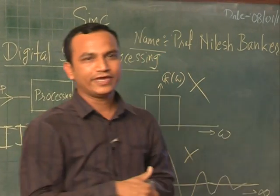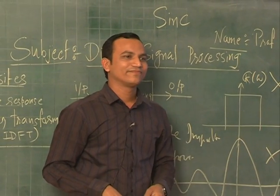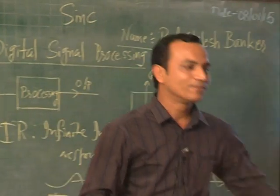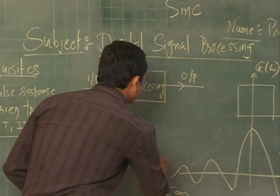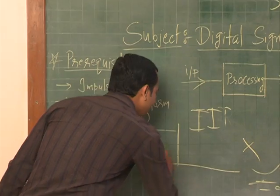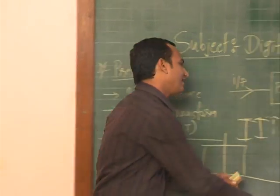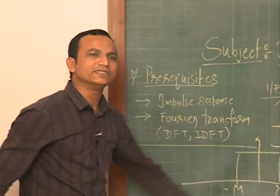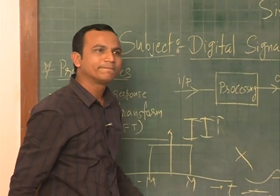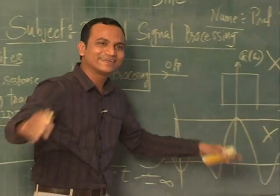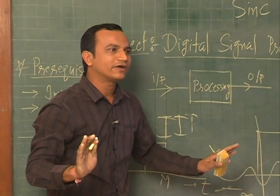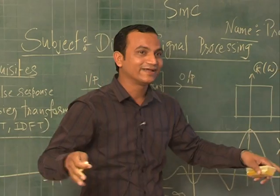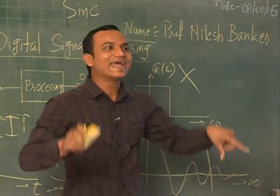To convert this infinite time signal into a finite one, I need to multiply it with another function that is finite in nature — going from some -M to M, where M is an integer. If you multiply the infinite sinc signal with this finite function, you get a finite sinc. My infinite sinc signal now becomes finite. My objective is to design a low-pass filter, so this solves the first problem.